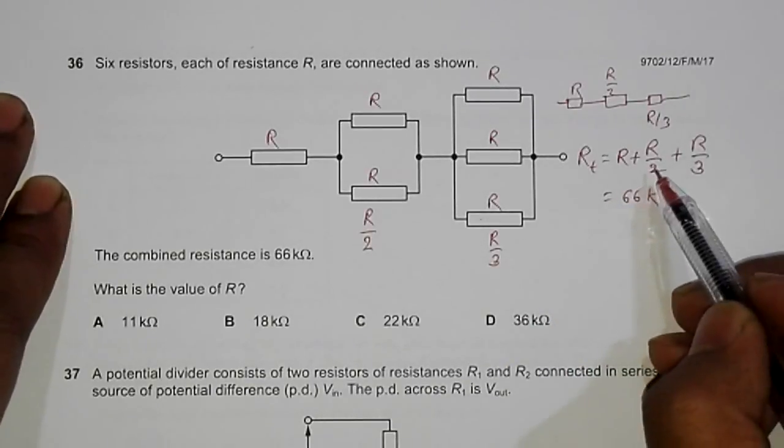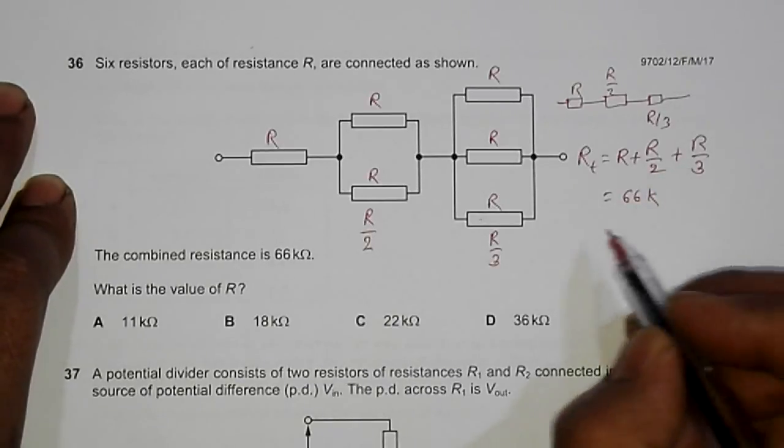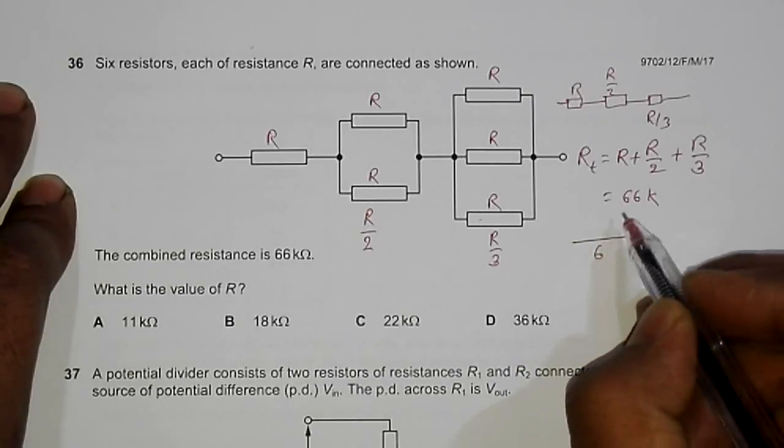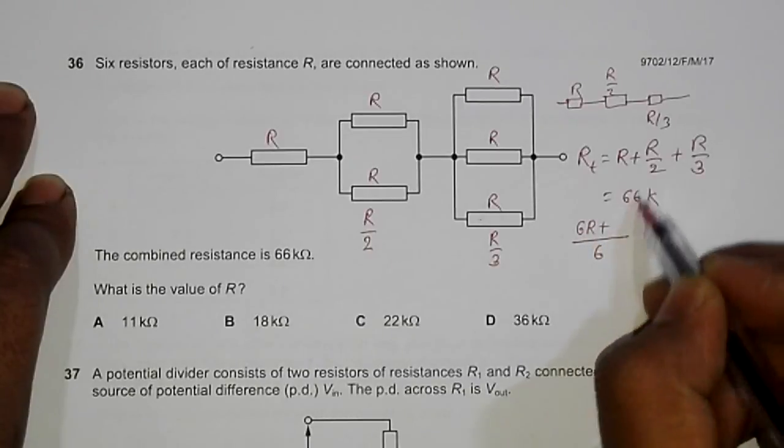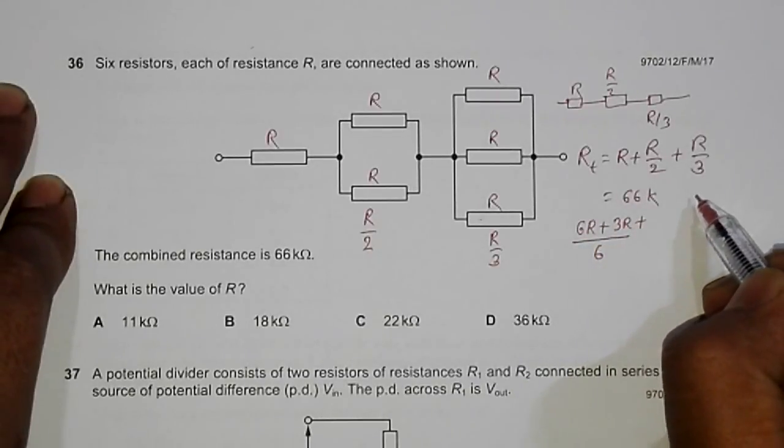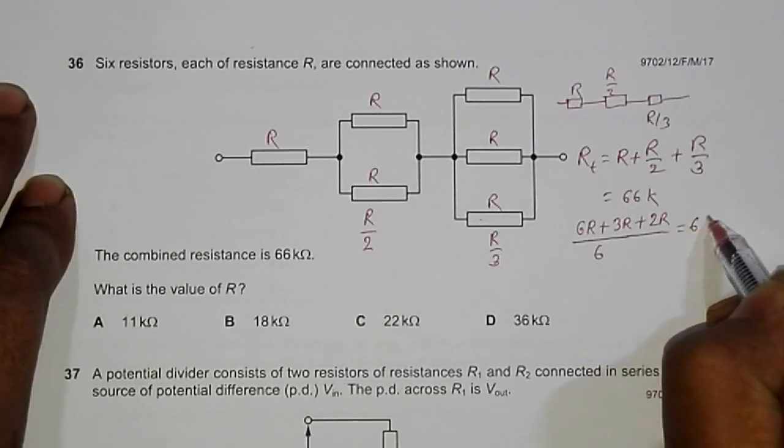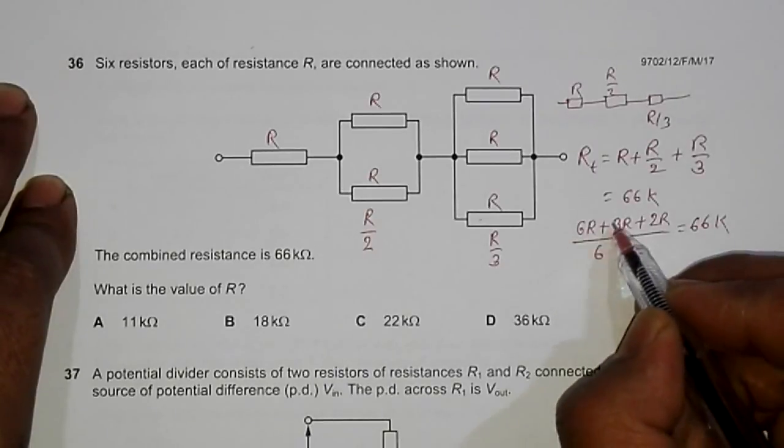If you do simple mathematics here, finding the common denominator 6, we get 6R plus 3R plus 2R equal to 66K times 6. This gives us 11R equal to 66 times 6 kilo ohms.